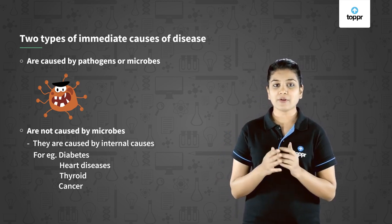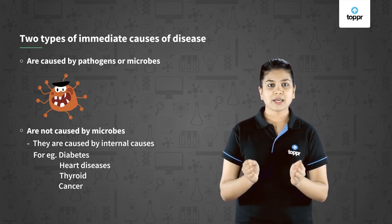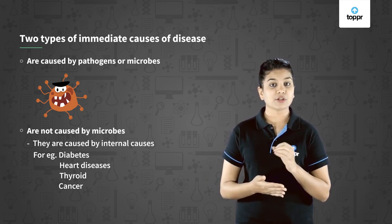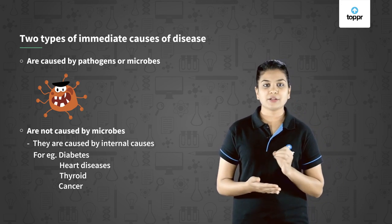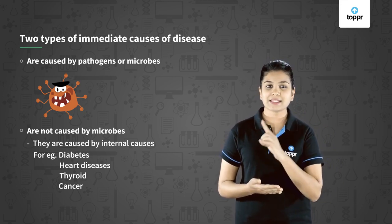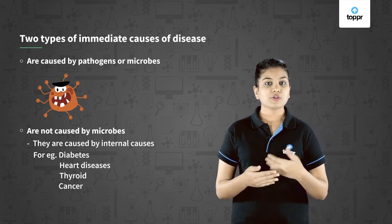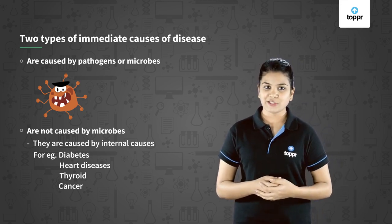So till now, you have understood very well that there can be two categories of diseases. First, the infectious diseases, which are caused due to microbes or external factors. Second, the non-infectious diseases, which usually occur due to intrinsic factors. In this lesson, you have understood the various levels of causes of disease, and also the two most important immediate causes of a disease.